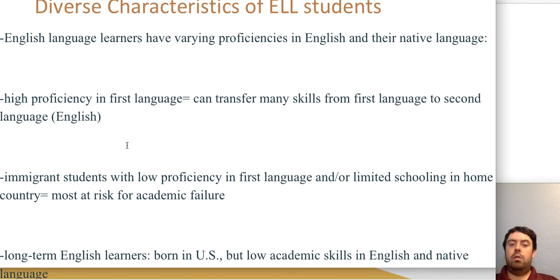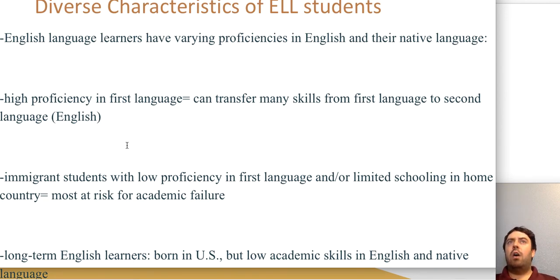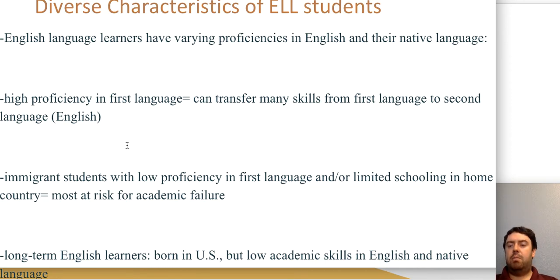Long-term English language learners are a concern for many school districts. Many times these are students born in the United States who never received strong instruction in either language. They might be able to converse in their native language with family and friends, but they struggle to read and write in it, and they also have below grade level English skills. These students are most at risk of dropping out or experiencing school failure, but the SIOP model can help support them.